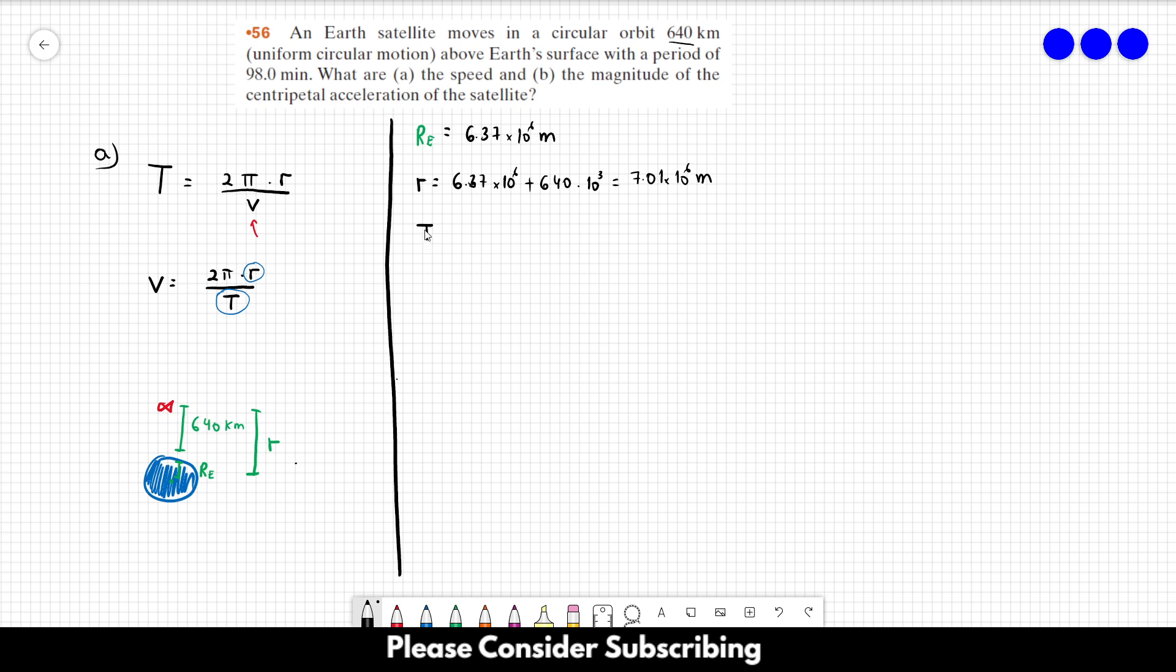Okay, now we need the period. We have the period in minutes. We have to convert it to seconds. So it is 98 times 60, and this gives us 5,880 seconds.